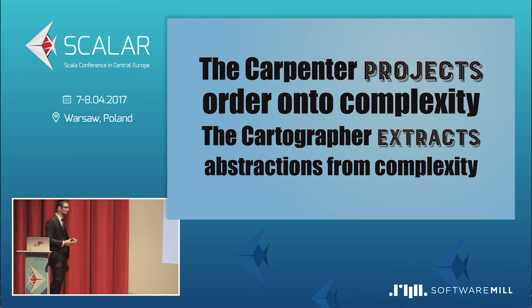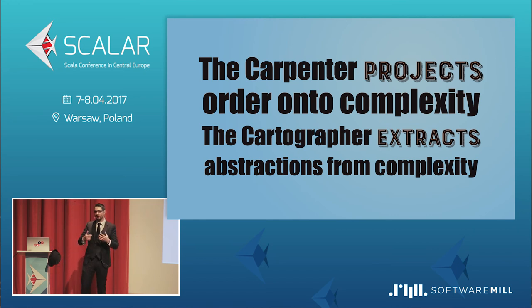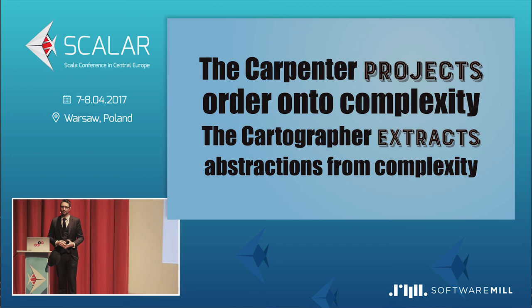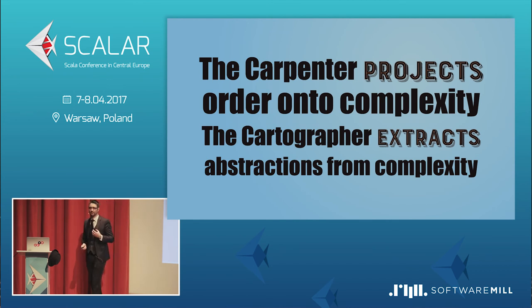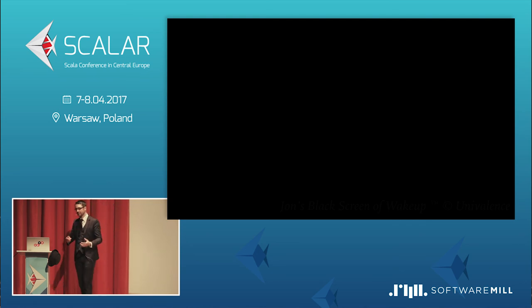So to sum it up, we could say that carpenters and cartographers are dual to one another — they are the same with the arrows reversed. The carpenter projects a plan, projects order onto complexity, whereas the cartographer extracts abstractions from the same complexity. And of course, you should have understood that I prefer cartographers to carpenters. But if you've been listening carefully, you should remember that metaphors are something we should be aware of — and carpenter and cartographer are merely metaphors. So we cannot completely ditch one or the other.